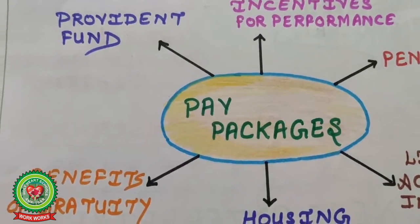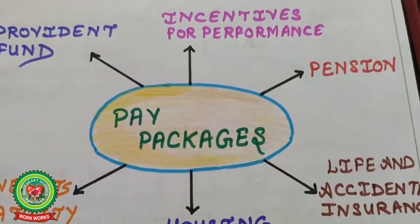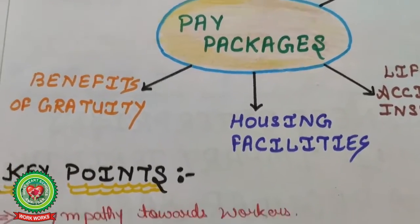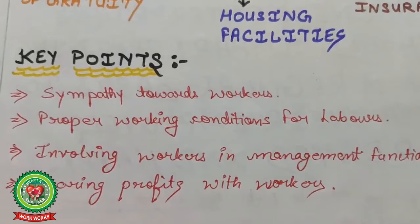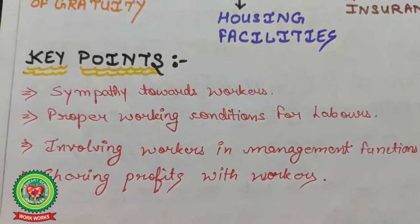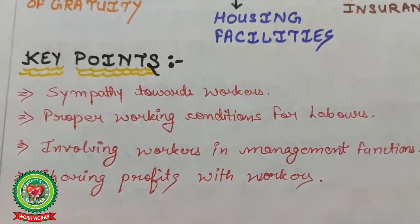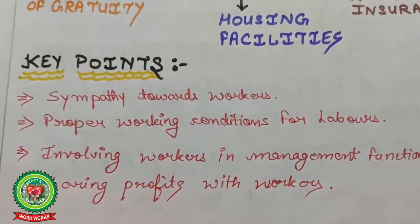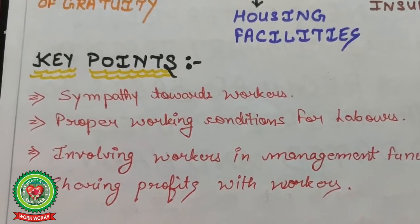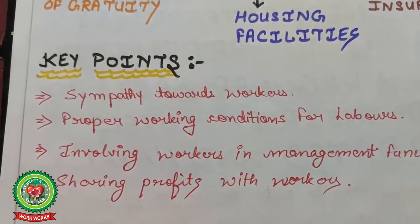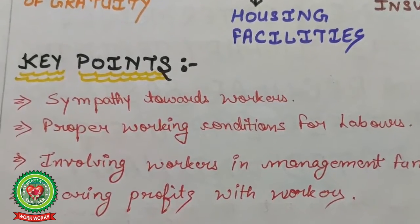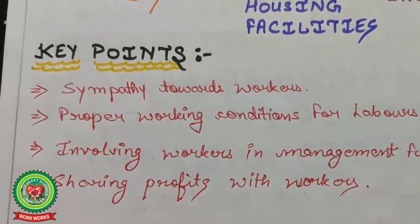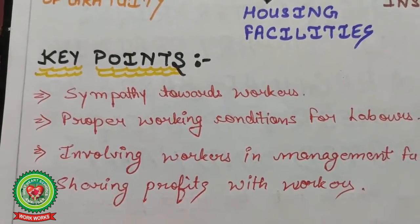Pay packages available include incentives for performance, provident fund, benefits of gratuity, pension, life and residential insurance, and housing facility. Key points include: sympathy toward workers, proper working conditions for laborers, involving workers in management functions, and sharing profit with workers. Treat laborers well — provide proper hygienic places, proper canteen facility, and proper wages so that they are satisfied.